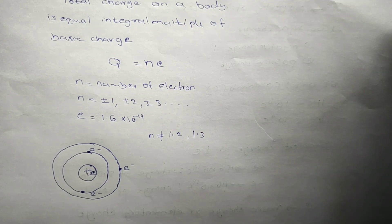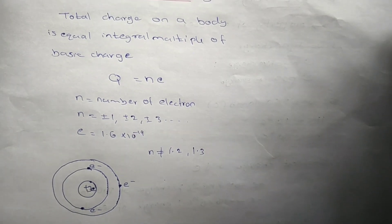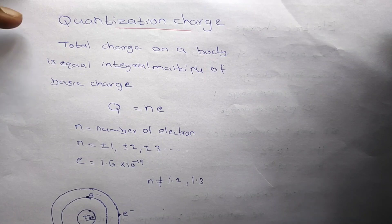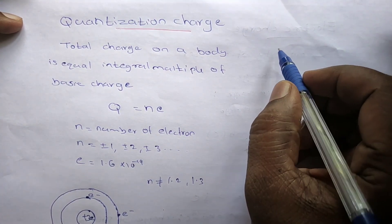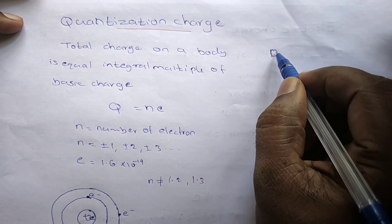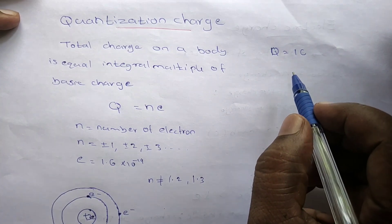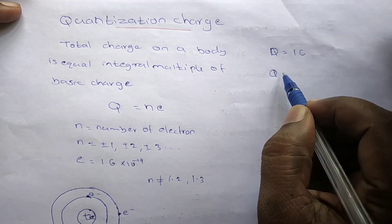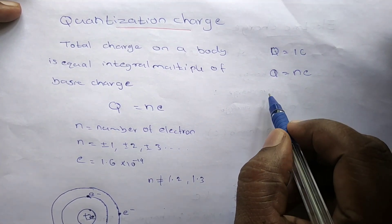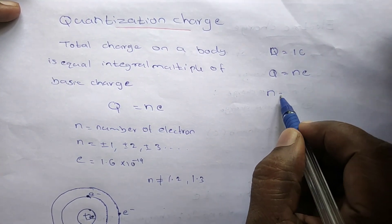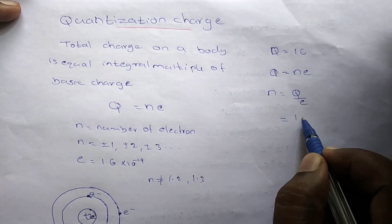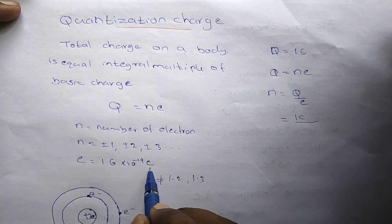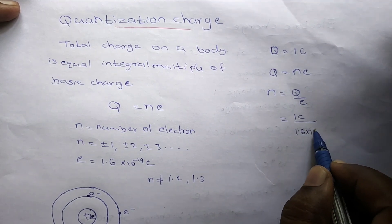This is about quantization. Based on this quantization principle, we can solve a problem: how many electrons make up one Coulomb of charge? Q is equal to 1 Coulomb. Using the quantization principle, Q is equal to ne, so n is equal to Q divided by e. Q is 1 Coulomb, and e is 1.6 into 10 power minus 19 Coulomb.